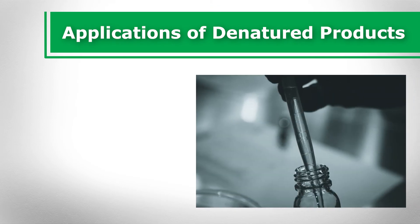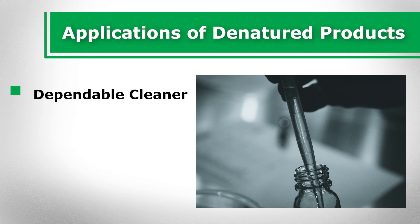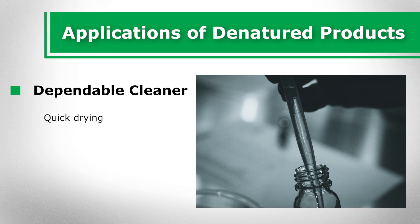Applications of denatured products: alternative denatured forms are used as a quick evaporating solvent by hobbyists, cleaning crews, painters, and manufacturing environments. Denatured alcohol is applied as a dependable cleaner to accomplish spot or grime removal. The quick drying properties are an exceptional function when the substance must not retain on the surface for an extended period of time. Camping stoves include denatured alcohol in fuels because it is an ideal clean burning solution that can be easily put out with water.